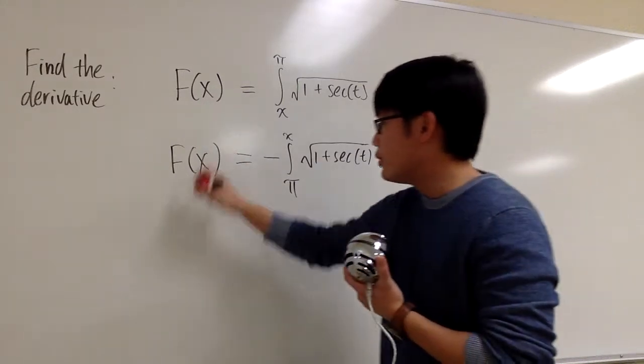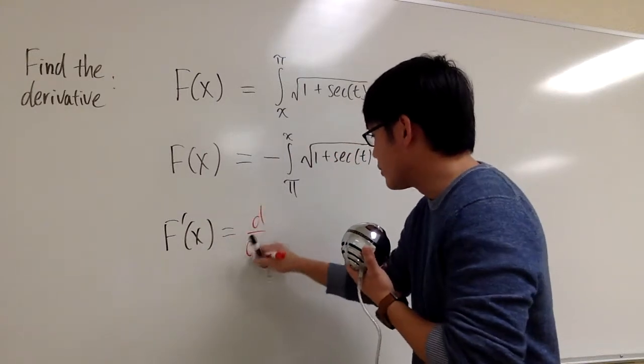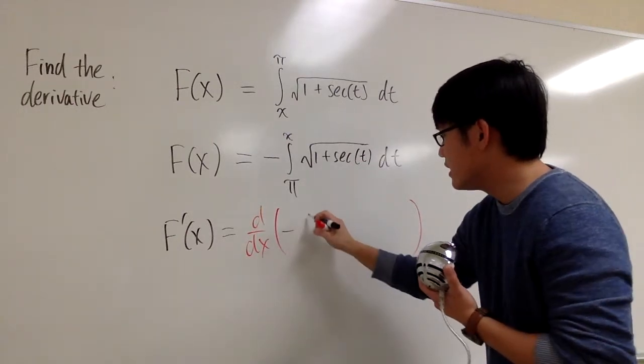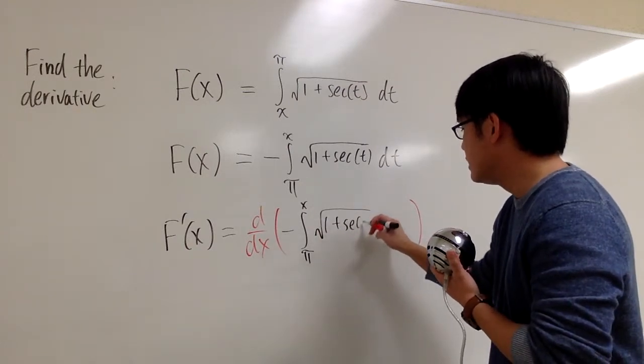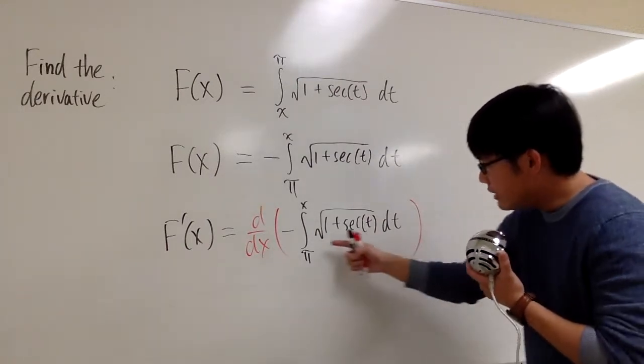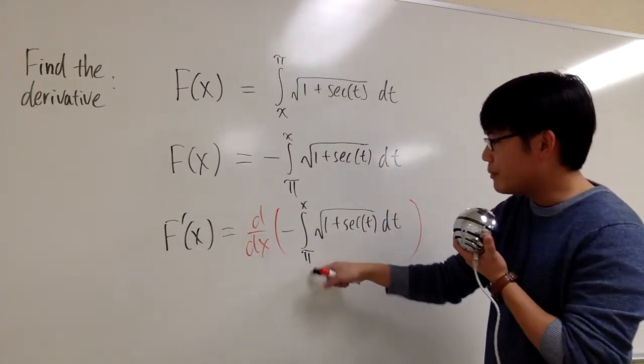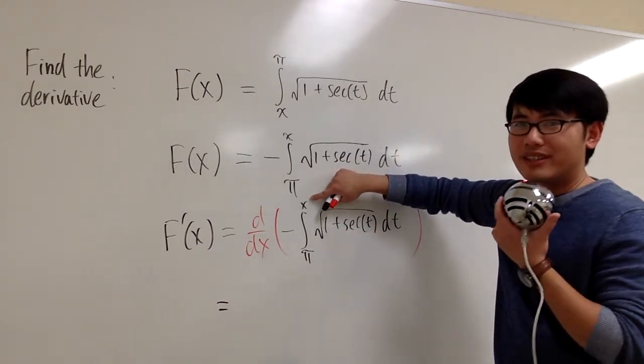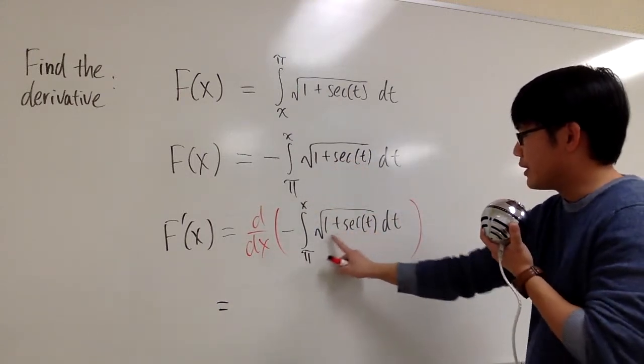And here we are ready to go. Now I would like to get f prime of x, which is, we are going to take the derivative of this integral right here. So that's the negative integral from π to x, square root of 1 plus secant t dt. And inside here, the variable that we are using is t, and the number doesn't matter. What you have to do is take the derivative of the integral, look at the expression in terms of x, which in this case is just x, and plug in x into all the t's that you see right here. That's all.